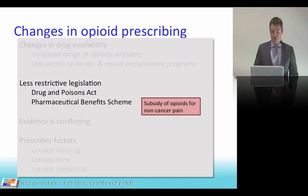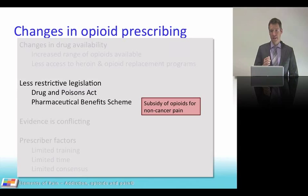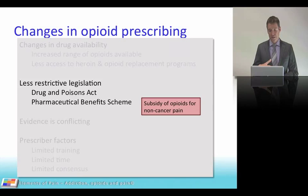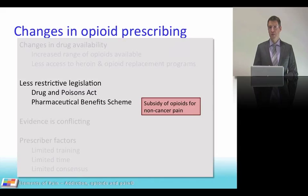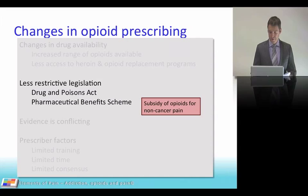Regarding less restrictive legislation — certainly in Australia, it has become easier for physicians to prescribe opioids. In NSW, authority to prescribe opioids may no longer be required. The Drug and Poisons Act is also important; if you're from the UK or elsewhere, check your local legislation. The Pharmaceutical Benefits Scheme now subsidizes opioids for non-cancer pain, making them cheaper for patients and easier to prescribe.